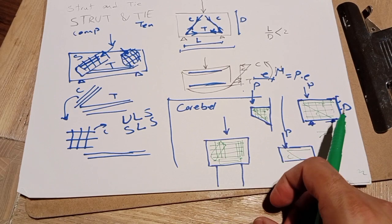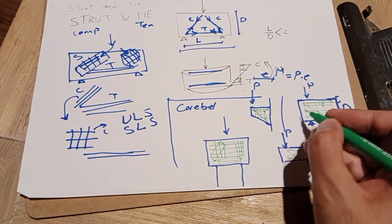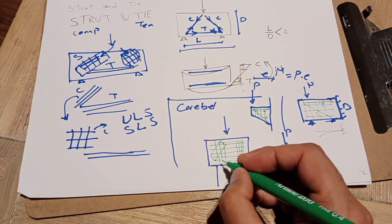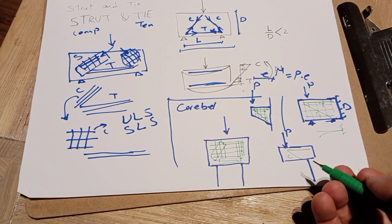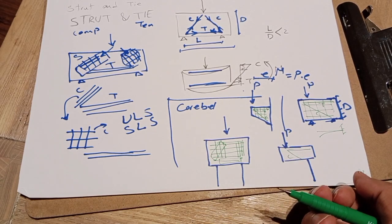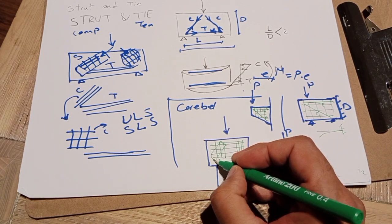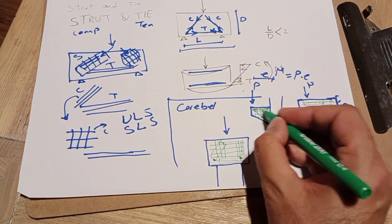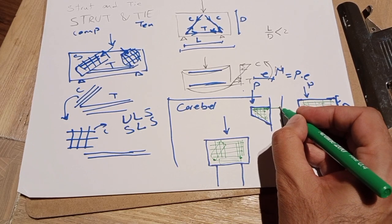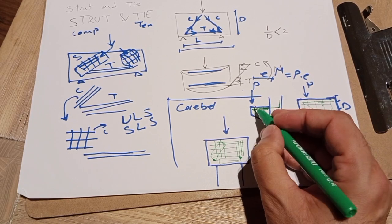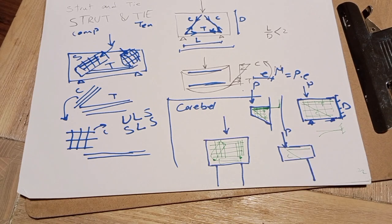The main thing in strut and tie is making sure you have enough development length for tension bars, because if you don't provide sufficient development length, the bar may slip and the whole system fails under load. Also make sure you have good anchorage for tension reinforcement bars. For a corbel, for example, you have a tension bar that needs sufficient development length — if it's not enough, you must provide extra length to ensure this part is strong enough for the tension load. That is the very basic concept of the strut and tie model.